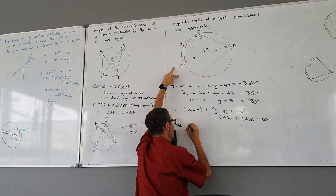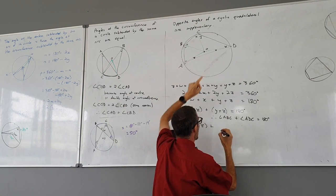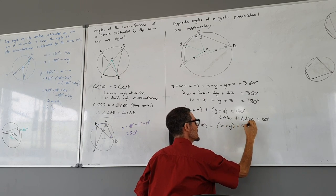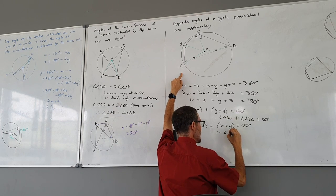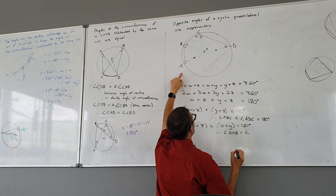Or W plus Z, and then over there X plus Y, are 180 degrees. Therefore angle DAB must equal angle DCB.